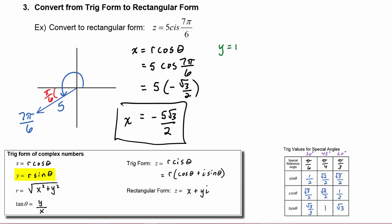y is equal to r sine of theta, so that's going to be five times the sine of seven pi over six. Looking at our special angle chart in the pi over six column, we see that the value for sine is one-half, and in quadrant three we know it will be negative. So our y value is negative five-halves.